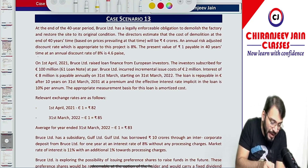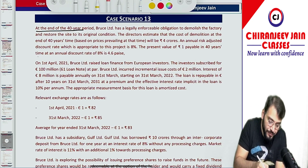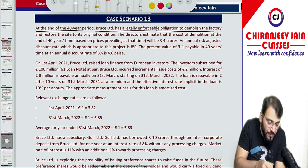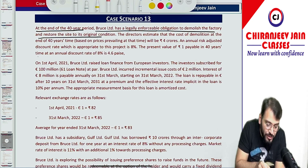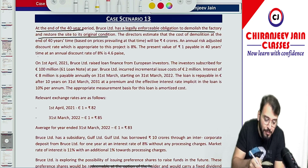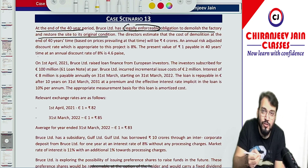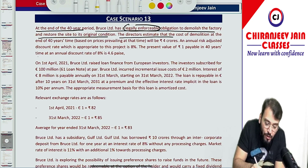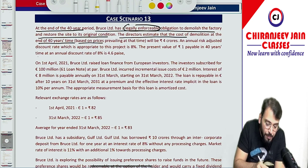What is given? At the end of a 40-year period, Bruce Limited has a legally enforceable obligation to demolish the factory and restore the site to its original condition. Of course, it is a question of provision for dismantling and restoration because there is a legally enforceable obligation, so we should create a provision. The directors' estimated cost of demolition at the end of the 40-year period, based on prices prevailing at that time, will be 4 crore.